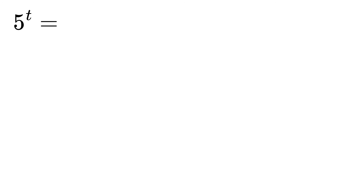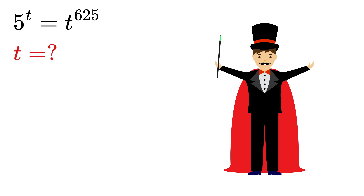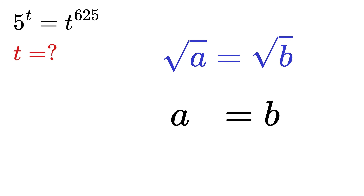We have 5 raised to t equals t raised to 625, and we have to find t. There's a very clever trick to solve this question. Suppose if we want to take the square root of an equation on both sides, what we do is we simply raise both sides to 1 over 2.